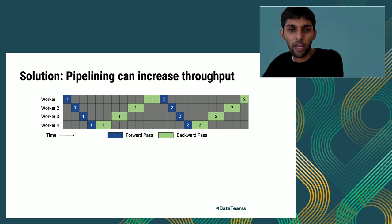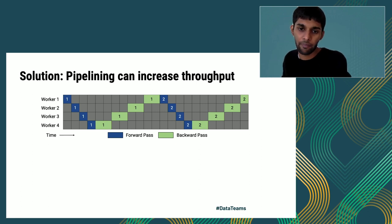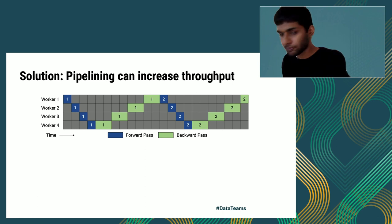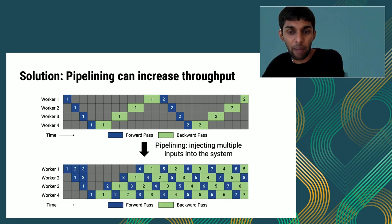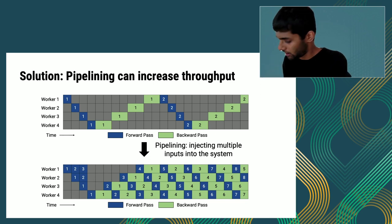One way of solving this problem is to use pipelining — by injecting multiple inputs into the system, we can ensure that in steady state every worker has a different input to process, thus improving utilization and consequently throughput.